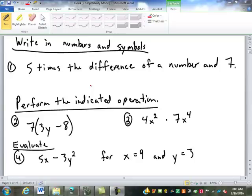Okay, let's see how you did on these. So the first one, we're just taking the words and we're trying to translate it into numbers and symbols. So five times the difference of a number and seven. Anybody want to throw out an answer for that one?